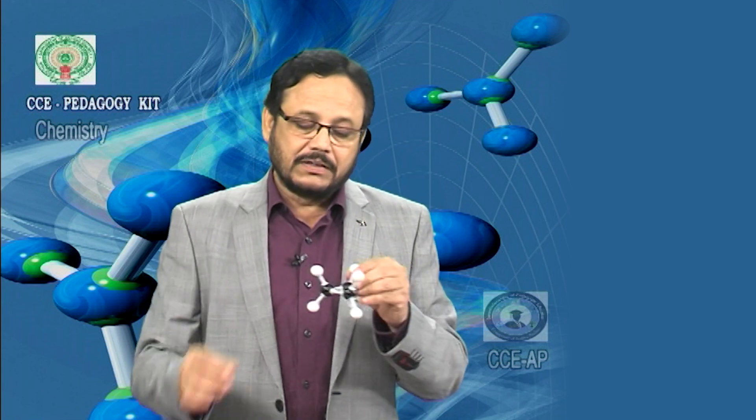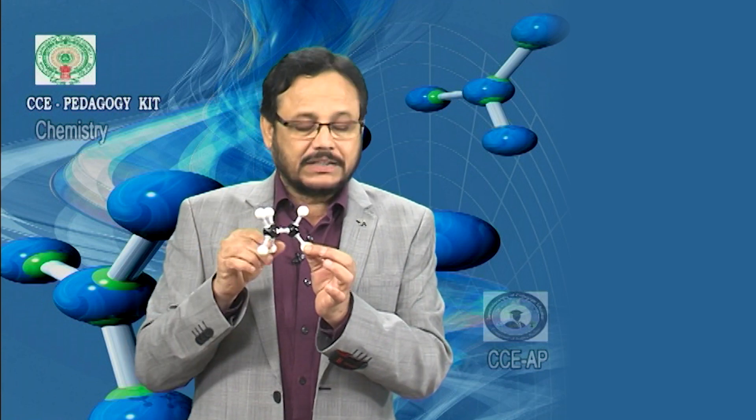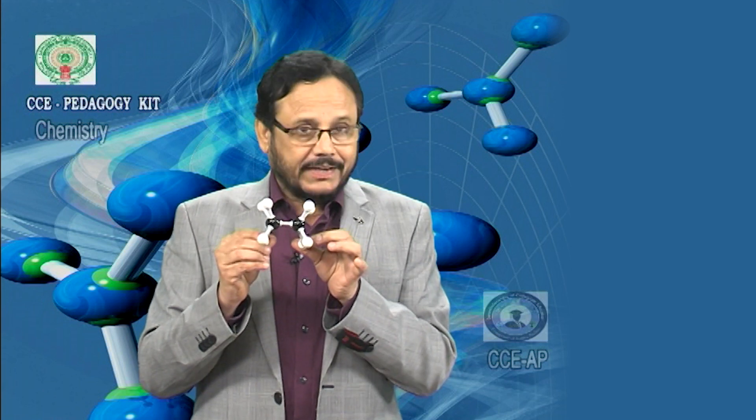When coming to the cycloalkanes, first I am going to explain cyclopropane, where the bond angle is 60 degrees. The second molecule I am going to explain is cyclobutane, whose bond angle is 90 degrees. And the third is cyclopentane, whose bond angle is 108 degrees. Let us take up these things in detail with regard to Baeyer strain theory.